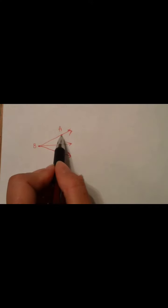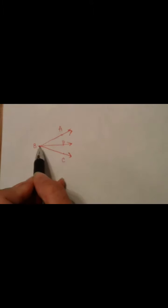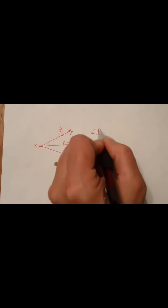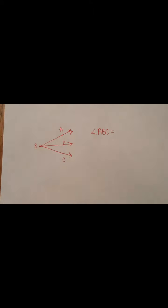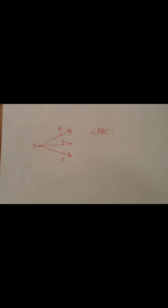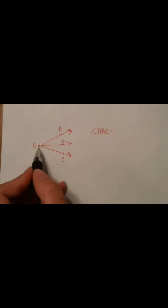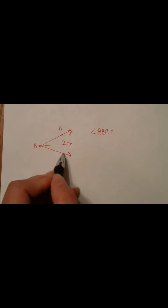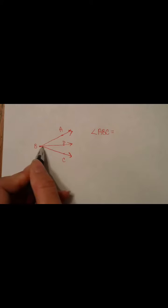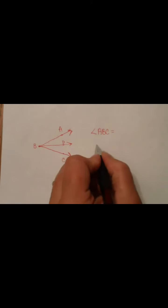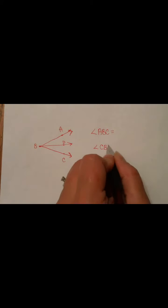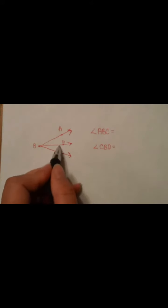So, we start at A, and we don't lift up our pen. Go from A to B to C. So, we have Angle ABC. That's the big angle. Now, this big angle is actually made up of two smaller angles that happen to share this middle ray. So, the first angle, we're going to name CBD. So, Angle CBD is this smaller angle.